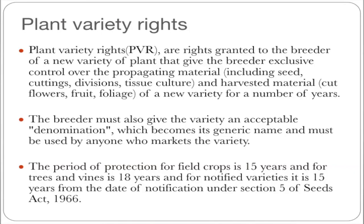In India, field crops are protected for 15 years, trees and vines for 18 years, and notified varieties for 15 years.